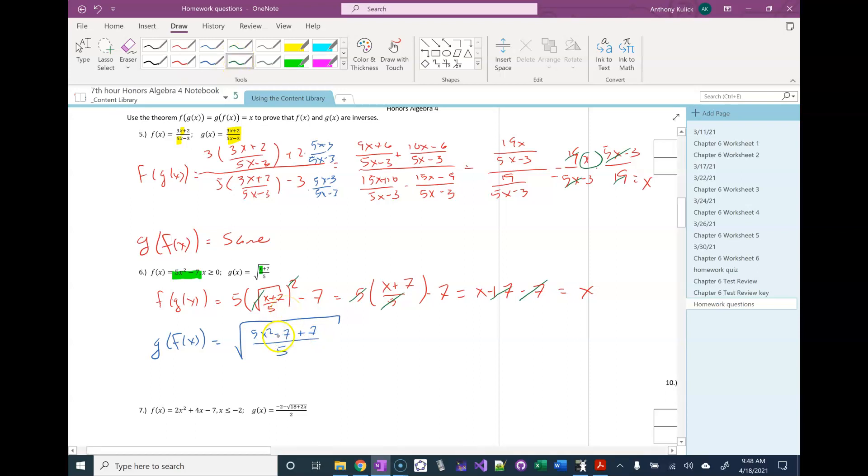If I combine my like terms, negative 7 and positive 7 add to give you 0. So the x squared divides by 5 and times 5 cancel.